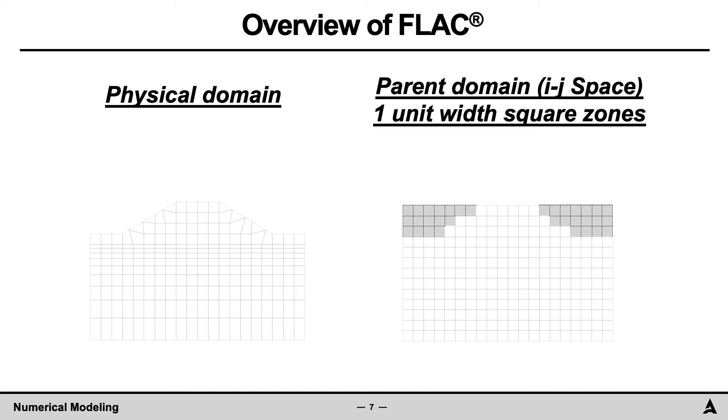The domain in FLAC can be viewed in the physical domain and the parent domain. As an example, consider the embankment shown. The grid in the physical domain is the embankment and is composed of rectangular and non-rectangular zones. The parent domain representation is shown to the right and is composed of one unit width square zones. Note that in the parent domain, the grade zones have been nulled so as to allow the slope faces on the embankment to be modeled in the physical domain. Note that for the null zones, all internal calculations in FLAC are omitted. An example mapping between the physical and parent domain is provided here for zone 18-1 and zone 16-11.